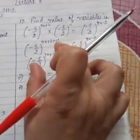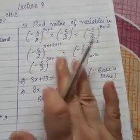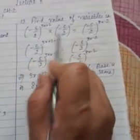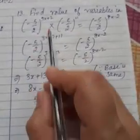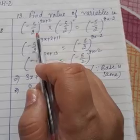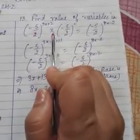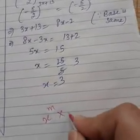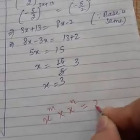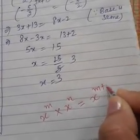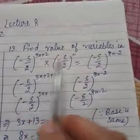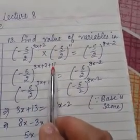For that, the base on the left hand side and right hand side should be the same. On the left hand side the base is the same: minus 5 by 2. You know the law of exponents — if the base is the same and multiplication is happening, then the powers are added: x^m × x^n = x^(m+n). So 3x + 2 and 11 will be added.